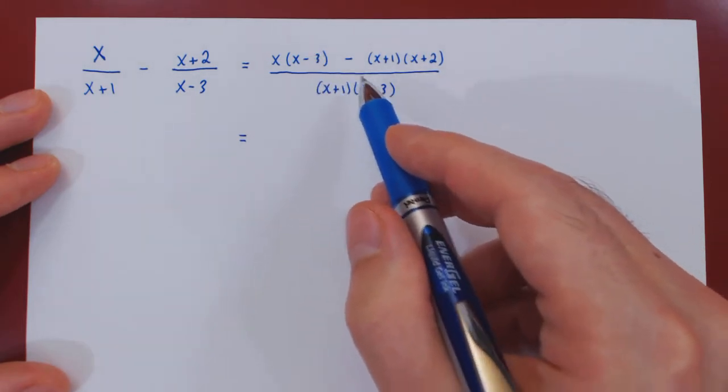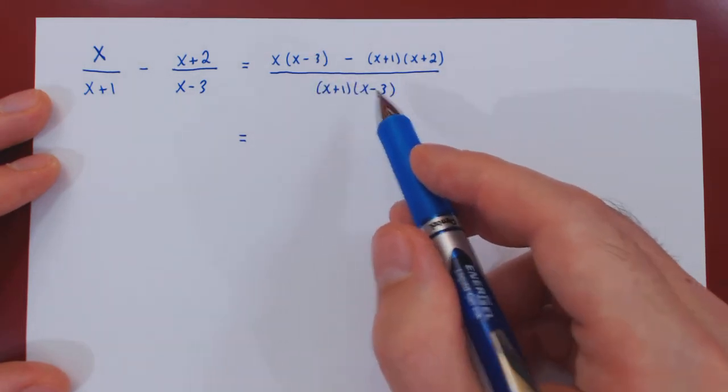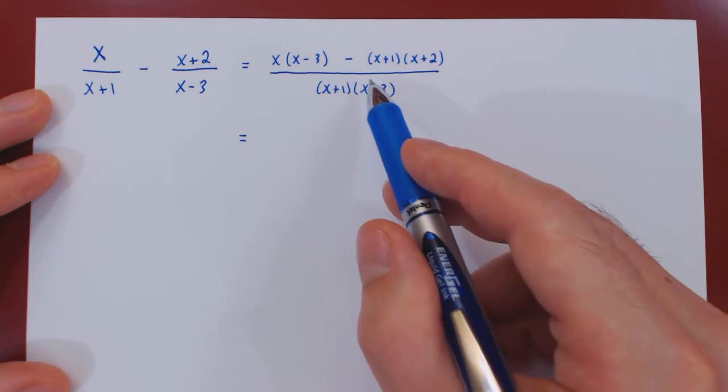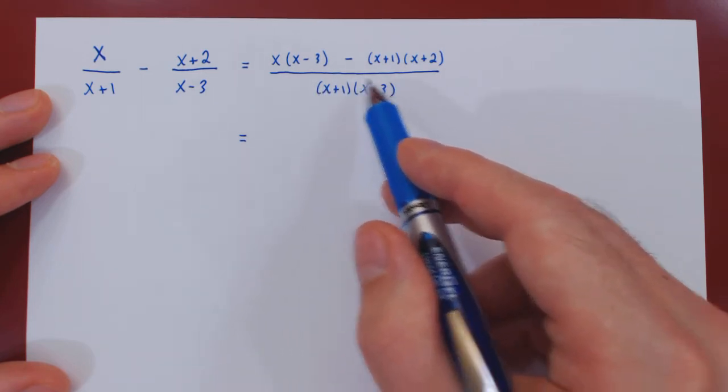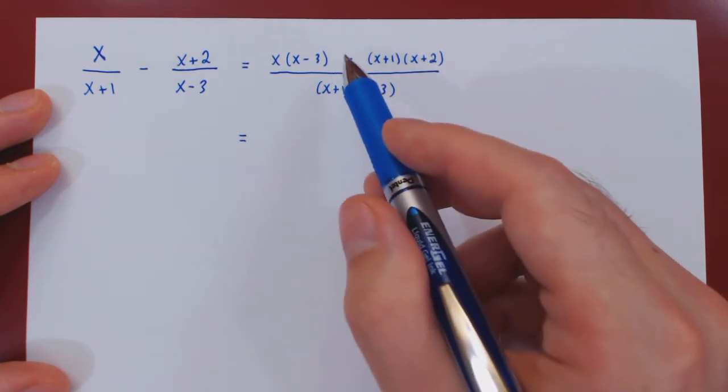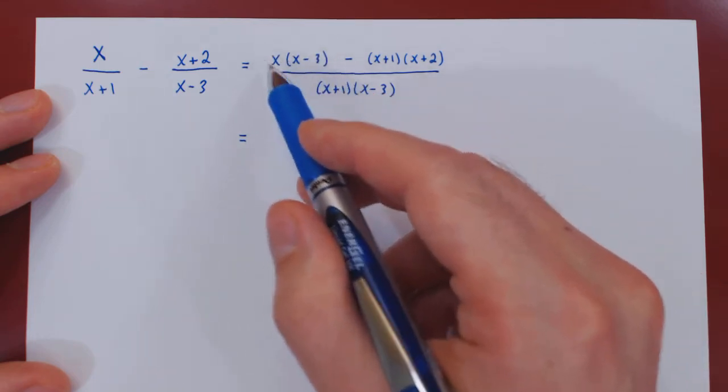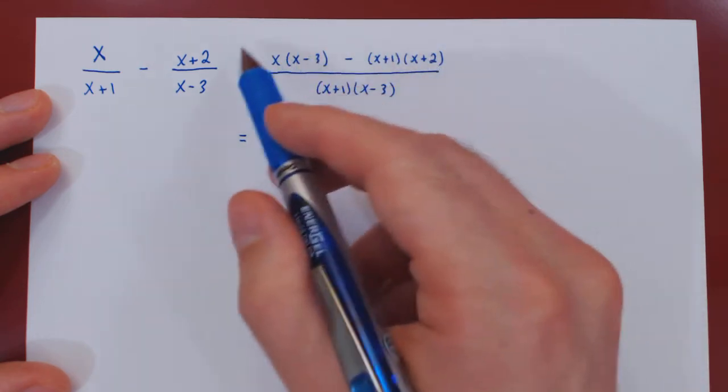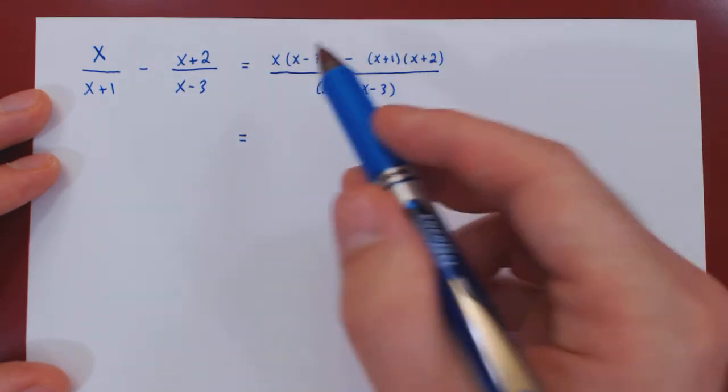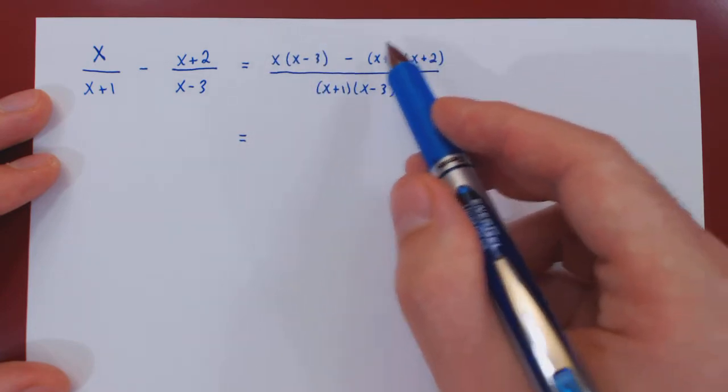Well, the denominator is already fully factored, so do not multiply this out. This is a perfectly factored expression, leave it as is, but on the numerator we have a difference of two factored expressions. The whole is not factored, so what we can do now is expand the first and second term, perform the subtraction and then simplify if possible.